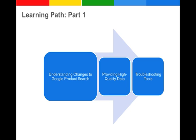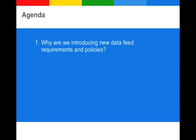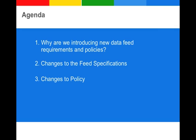This video is part of a four-part learning path. Understanding changes to Google product search is the first part of this learning series, followed by a video on how to provide high-quality data and a video on troubleshooting tools. We'll go through why we are introducing changes, followed by an overview of the actual changes. We also explain what happens if you don't comply and how you will be alerted of this.